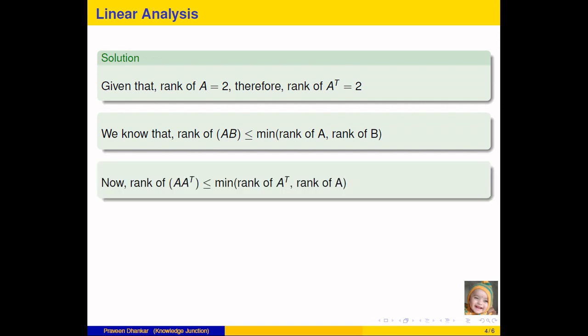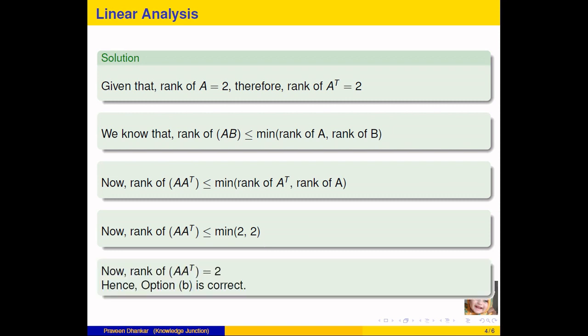In this case, rank of A transpose A less than equal to minimum of rank of A transpose, rank of A. So minimum of rank of A transpose is 2 and rank of A is 2. So minimum of 2, 2 is, of course, it is 2. So rank of A transpose A equal to 2. So the option B is correct.